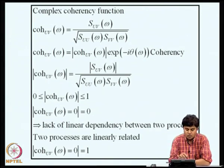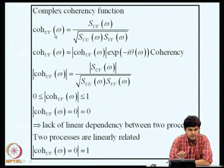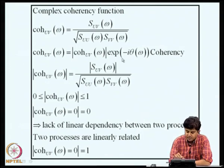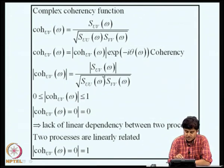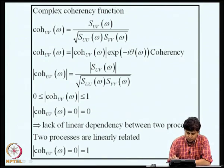We define a quantity known as the complex coherency function, which is the ratio of the cross PSD to the square root of S_uu(omega) times S_vv(omega), assuming the denominator is not zero. This itself is complex-valued and we can write it in terms of an amplitude and a phase. The amplitude is known as the coherency function, equal to the modulus of S_uv(omega) divided by the square root of S_uu times S_vv. The coherency function is bounded between 0 and 1; a value of 0 implies lack of linear dependency, and a value of 1 implies a perfect linear relationship.